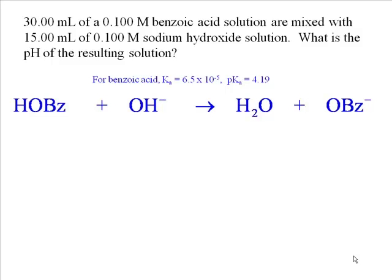What we're interested in is the species in this solution that contribute to the pH — the sodium ion is simply a spectator ion. We figure out how many millimoles of each we're starting with by multiplying the volume in milliliters by the molarity. That gives us 3 millimoles of benzoic acid and 1.5 millimoles of sodium hydroxide.